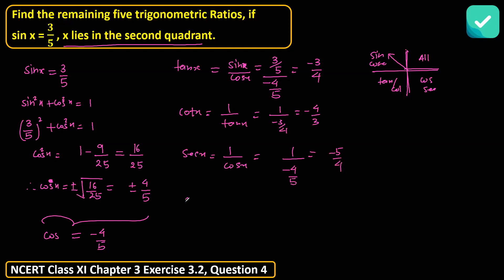Next one is cosec x, that's 1 over sine x. Sine x we already have as 3 over 5, so it will be equal to 5 over 3. That's all we got. Rest of the five trigonometric ratios, I hope you understood. Now let us look at the next question.